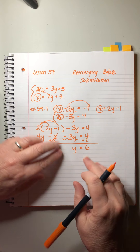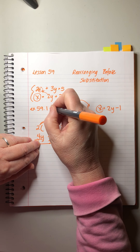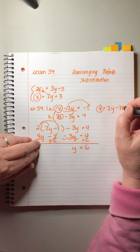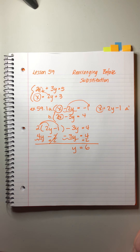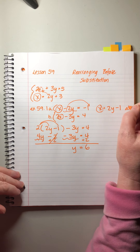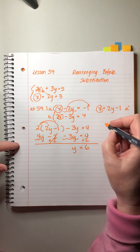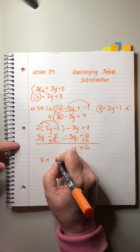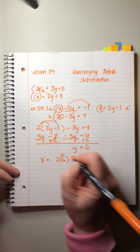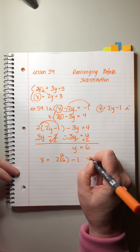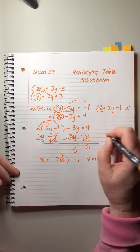Now all we need to do is plug this y value back into one of our original equations to solve for x. We can use any version, but the rearranged equation — which John sometimes labels a-prime — is ideal. So x equals two times six minus one, which is twelve minus one, giving us x equals eleven. We write the answer as an ordered pair: (11, 6). That's the right answer!